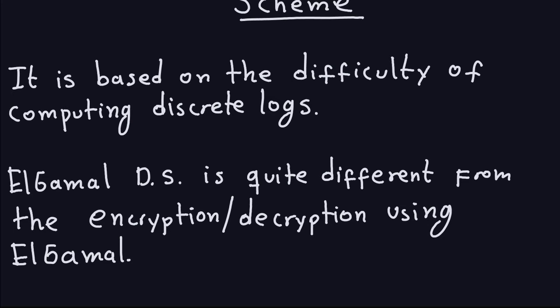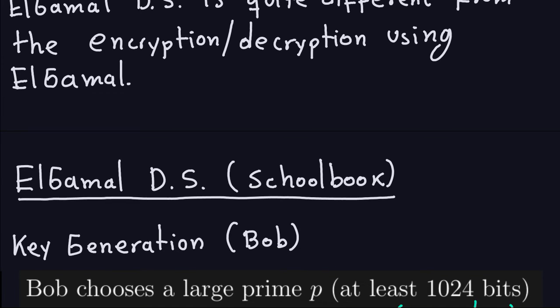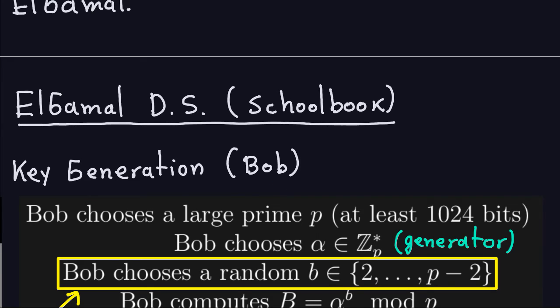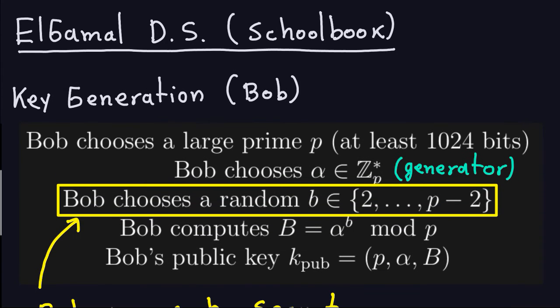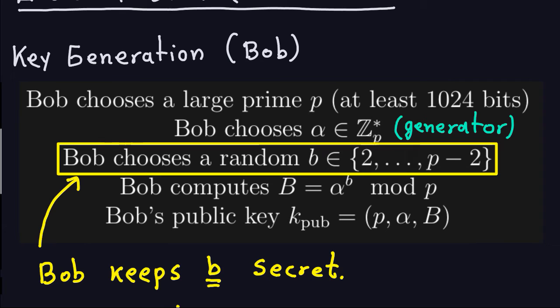The generation of the key is going to have a little bit more computations than what we did for the ElGamal. We're going to start almost exactly the same way. The key generation is done by Bob, or whoever wants to sign the messages. He or she will make something public and will have something that is the private key — the piece of information that allows you to sign the messages. This part is exactly the same as the key generation algorithm for the ElGamal encryption, which is the same for the ElGamal signature.